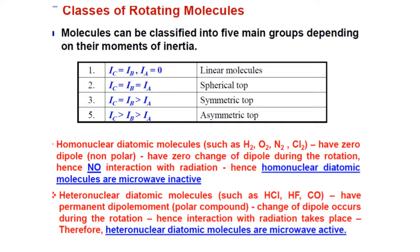Heteronuclear diatomic molecules have a permanent dipole moment, and in the presence of microwave radiation they act as dipole sensors and interact with radiation. Therefore, heteronuclear diatomic molecules having a dipole moment are microwave active and will show rotational spectroscopy. This is the message for today; in the next class we will learn more about rotational spectroscopy. Thank you.